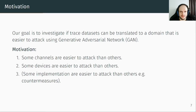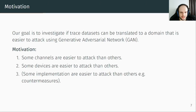In our previous work, we observed different things. First, some channels are easier to attack than others — for example, power consumption is easier to attack than electromagnetic emission. Secondly, some devices are easier to attack than others; some devices leak more information than others. Third, some implementations are easier to attack than others — for example, an implementation without countermeasures is easier to attack than one with countermeasures. Our goal is to investigate if a GAN can be used to translate traces from one domain to another which is easier to attack.